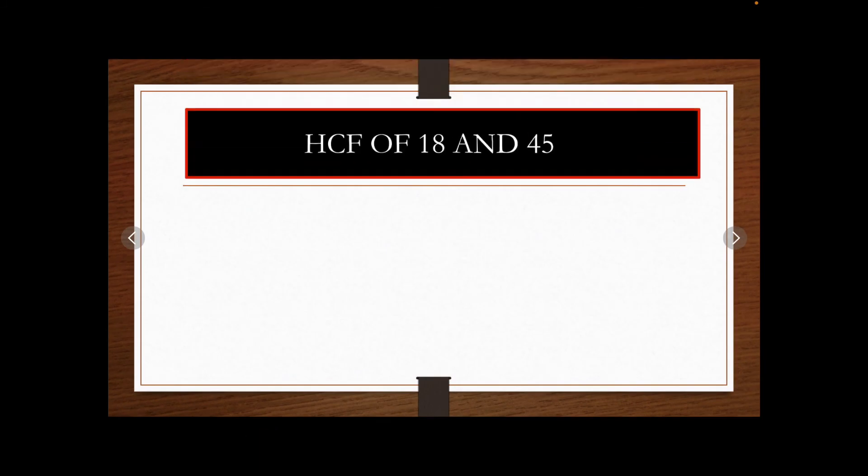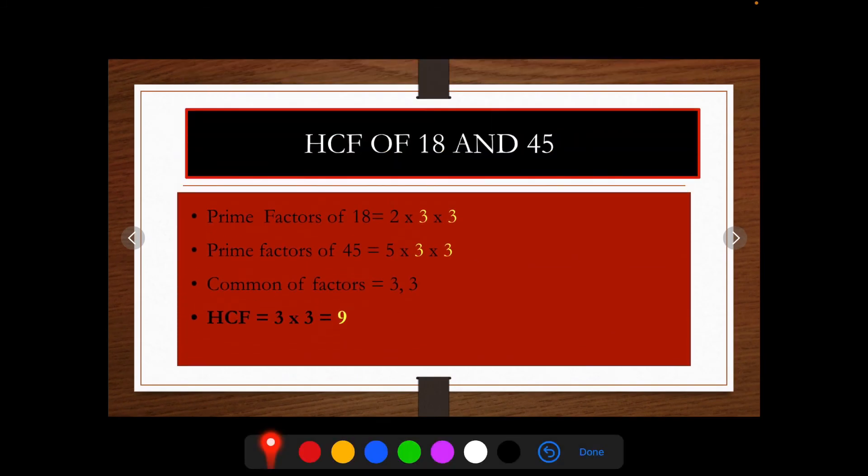So, here are the prime factors of 18 and 45. And then, the common factors are 3 and 3. So, here we get HCF of 18 and 45 equals to 9.